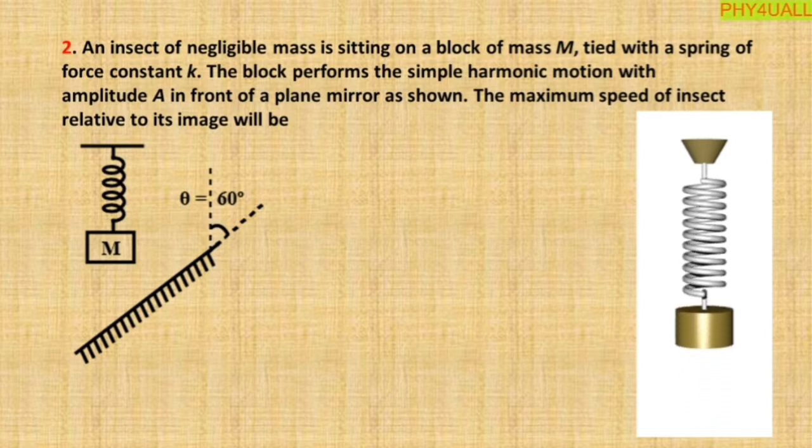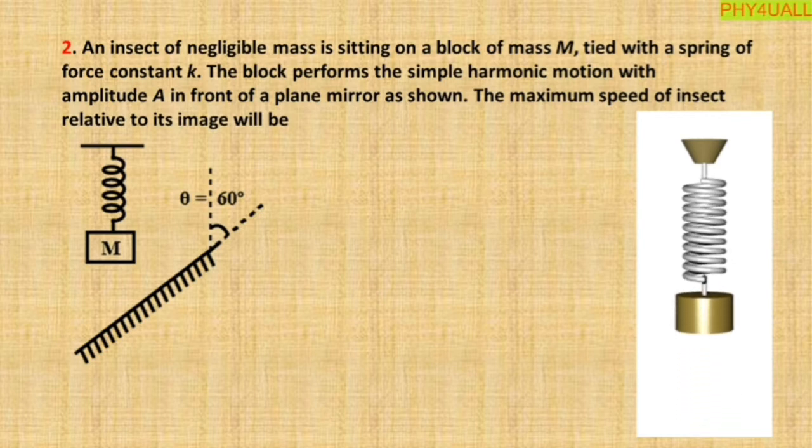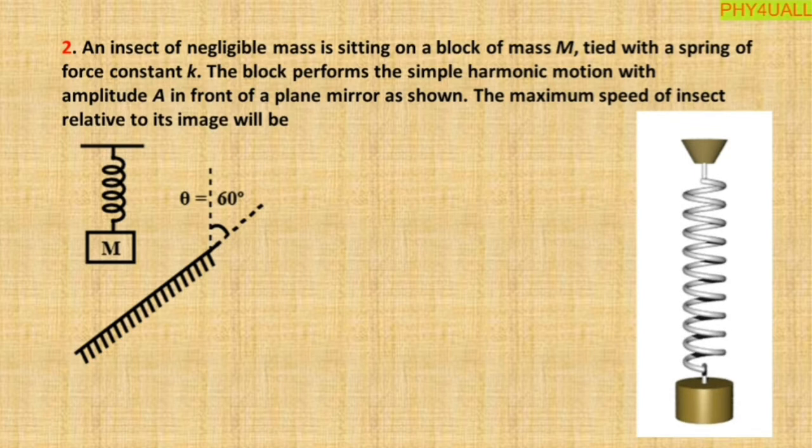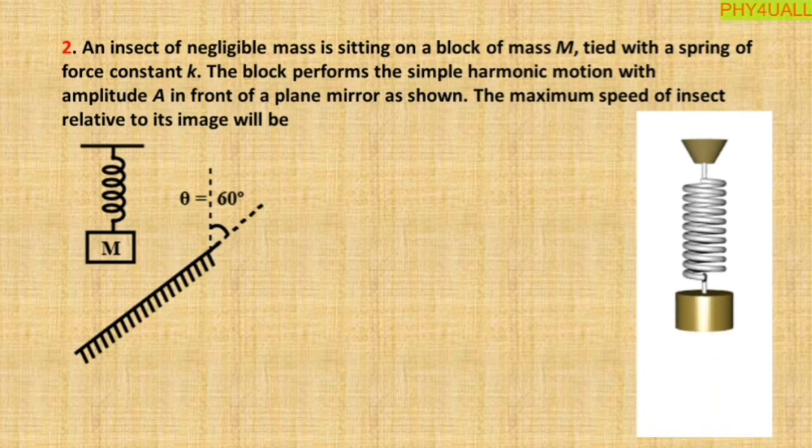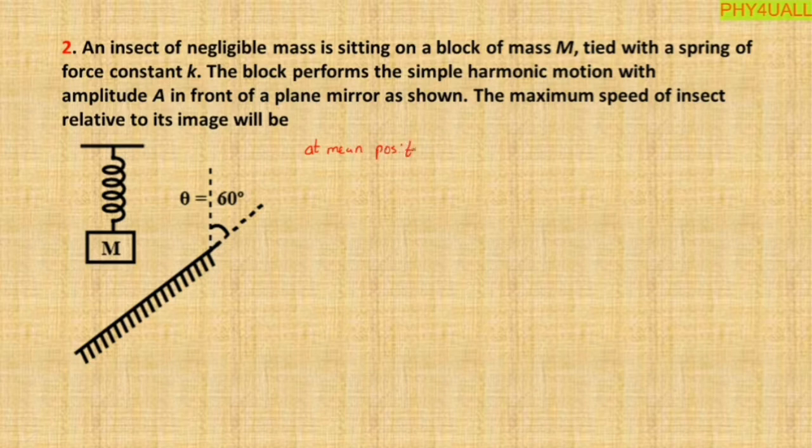For the block, as you already know, the block will get maximum velocity at the mean position. That means the insect sitting on that block will get maximum speed when the block reaches the mean position. So we can conclude that the insect will get maximum speed when the block reaches the mean position.